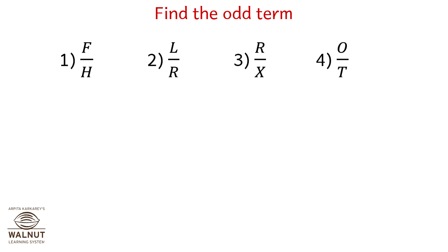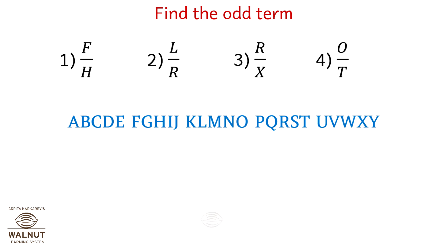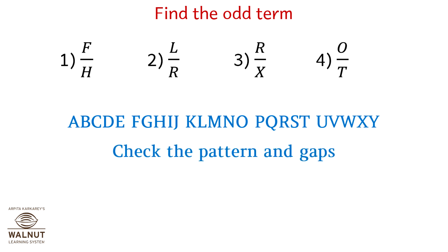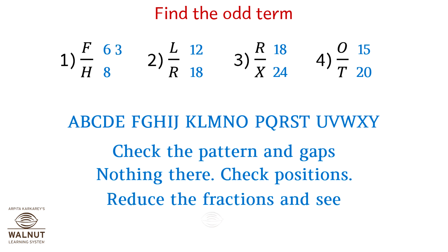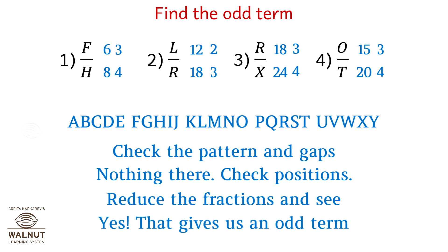Find the odd term. The series is given below. Check the pattern and gaps — nothing there. Check the positions: 6, 8, 12, 18, 18, 24, 15, 20. Reduce the fractions. Yes, we have a winner — it's option 2.